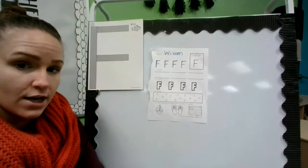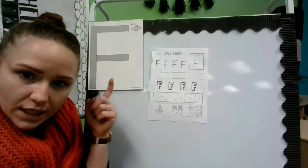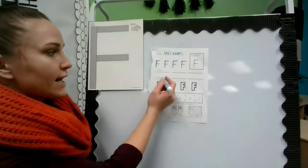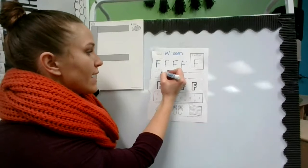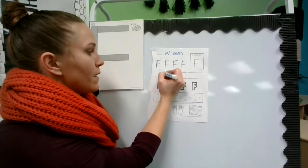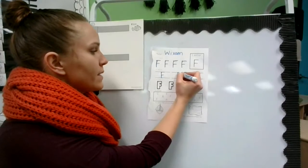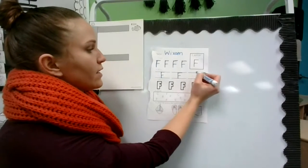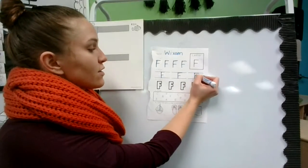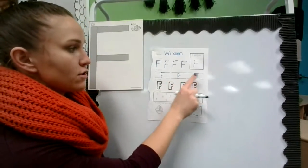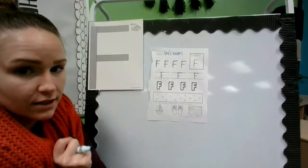After you trace the letter F, I want you to use your almost kindergarten brain and write it on your own. Try to write big line, jump back up, little line on top and middle. And again, big line, jump back up, little line on top and middle. For this direction, you're going to write one, two, three letter F's on your own.